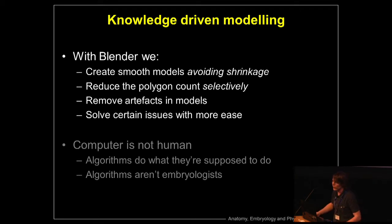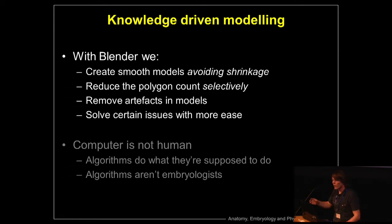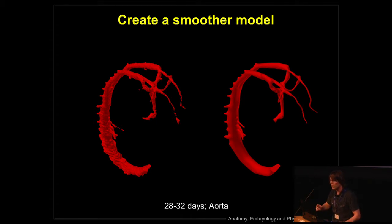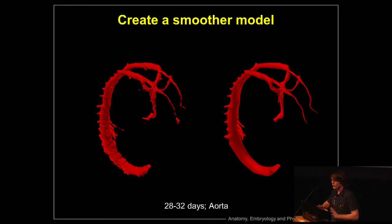There's a term coined at the work office: knowledge-driven modeling. That is to say we need a human mind to create these models. The models are organic — they are not large shapes that can be put into algorithms. With Blender we can do things that algorithms are limited with. For example, we can create smooth models while avoiding shrinkage. If you select all the vertices and hit smooth vertex a couple of times, it will shrink by a really small amount — and with scientific data we can't miss those micrometers of difference. So we need a human mind to make sure it becomes smooth but stays in the same space as before.